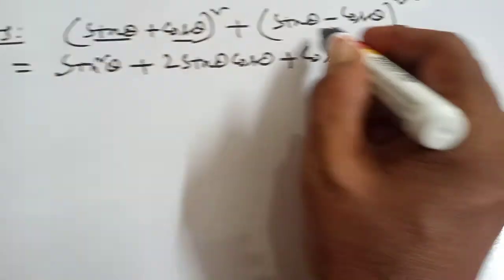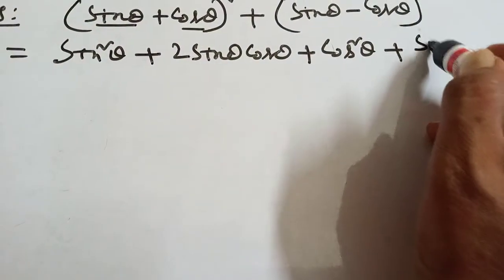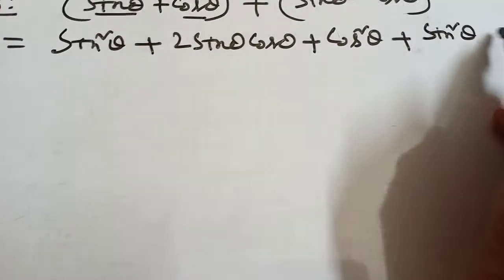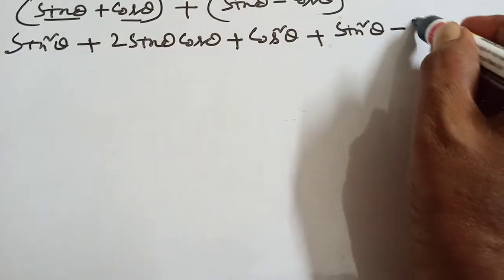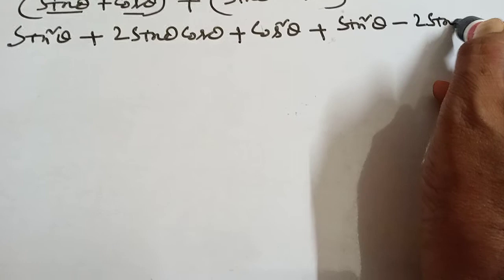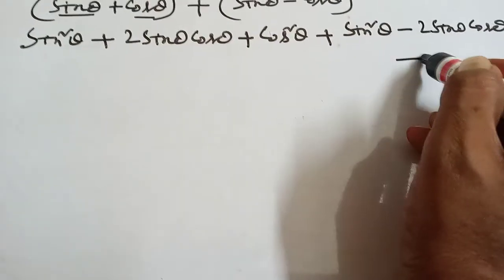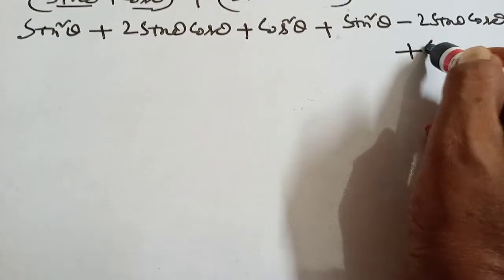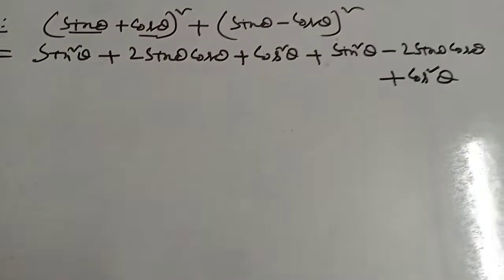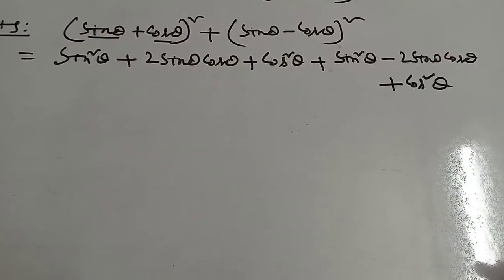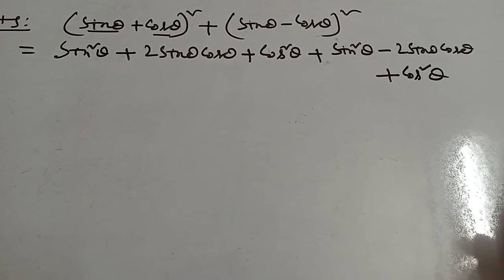Now a minus b whole square: a square minus 2ab plus b square — so that is sin squared theta minus 2 sin theta cos theta plus cos squared theta.